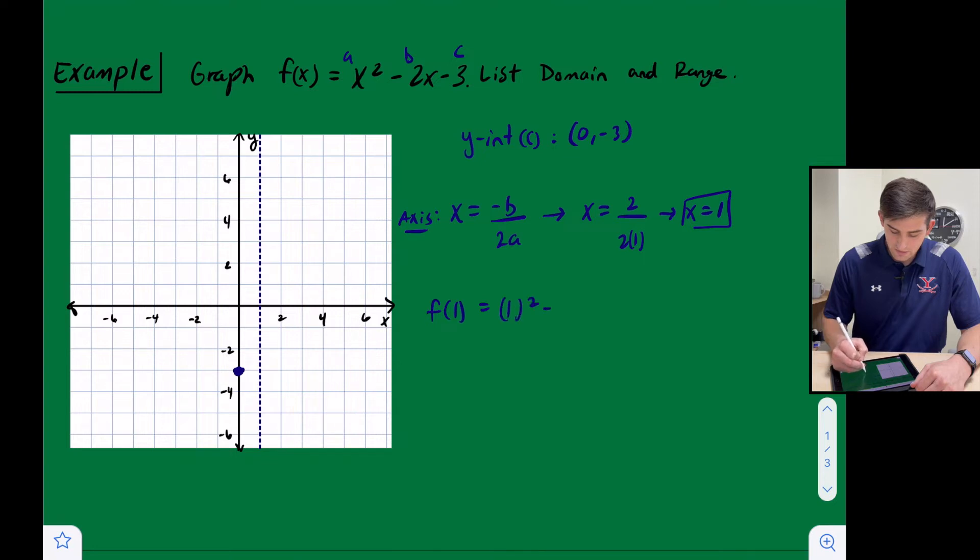And so now I'm going to use x equals 1 and plug that back in to find my vertex. So 1 squared minus 2 times 1 minus 3. So 1 minus 2 minus 3. 1 minus 2 would be negative 1, and negative 1 minus 3 would be negative 4. So this gives me my vertex. My vertex is 1 comma negative 4.